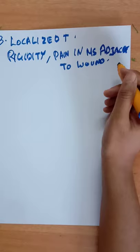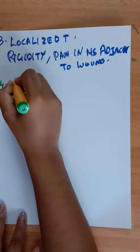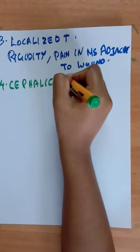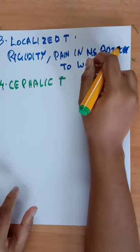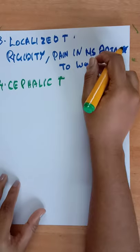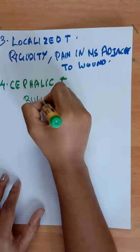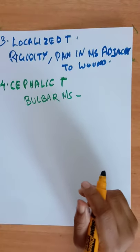Cephalic tetanus is a form of localized tetanus which occurs due to injury of the bulbar muscles, and it has a poor prognosis.